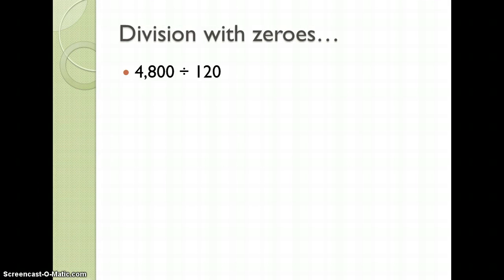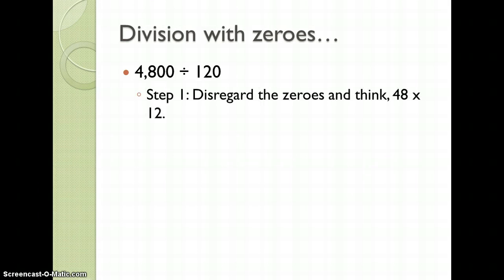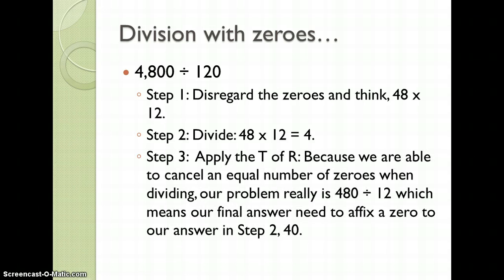For division with zeros, we're going to have 4,800 divided by 120. We're going to disregard the zeros and think 48 divided by 12. We're going to divide 48 by 12, which gives us 4. We're going to use the test of reasonableness because we're able to cancel an equal number of zeros when dividing. Our problem is really 480 divided by 12, which means our final answer we need to affix a zero in step two to get us a final answer of 40.